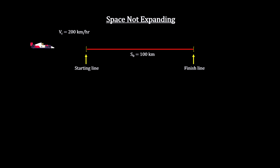Expanding space has significant implications for measuring distance. Consider a race track that's 100 kilometers long at the time the race car crosses the starting line, traveling 200 kilometers per hour.